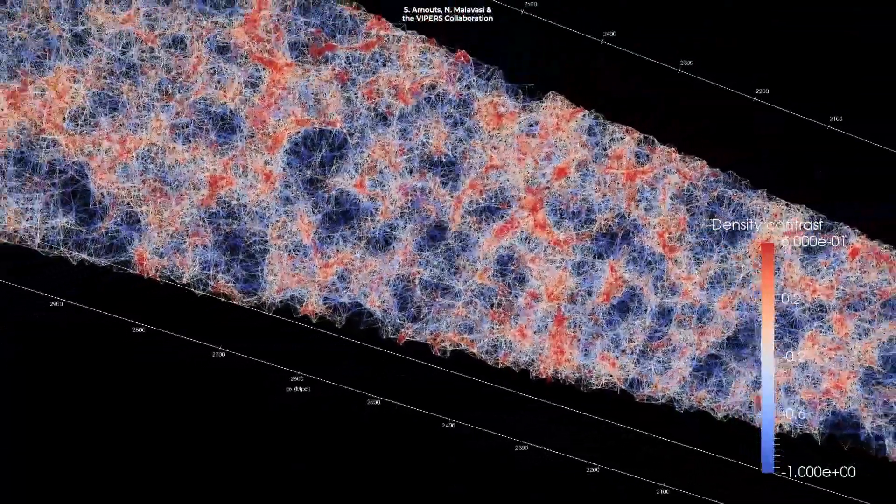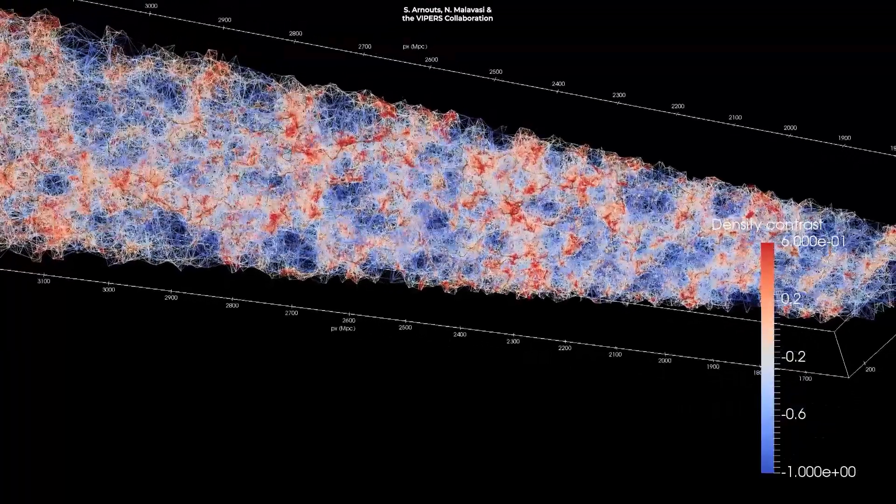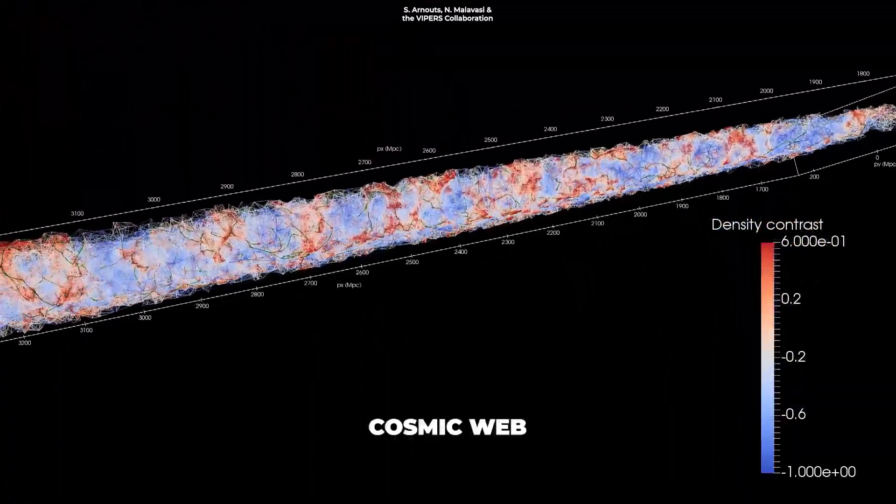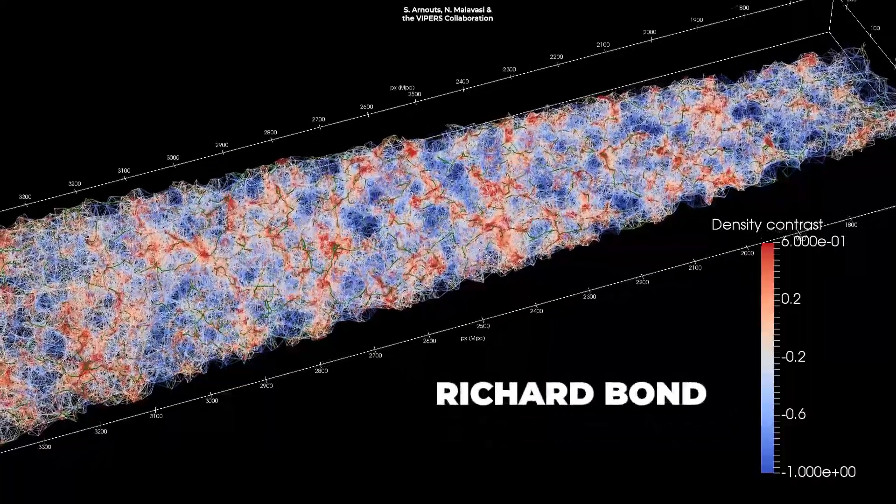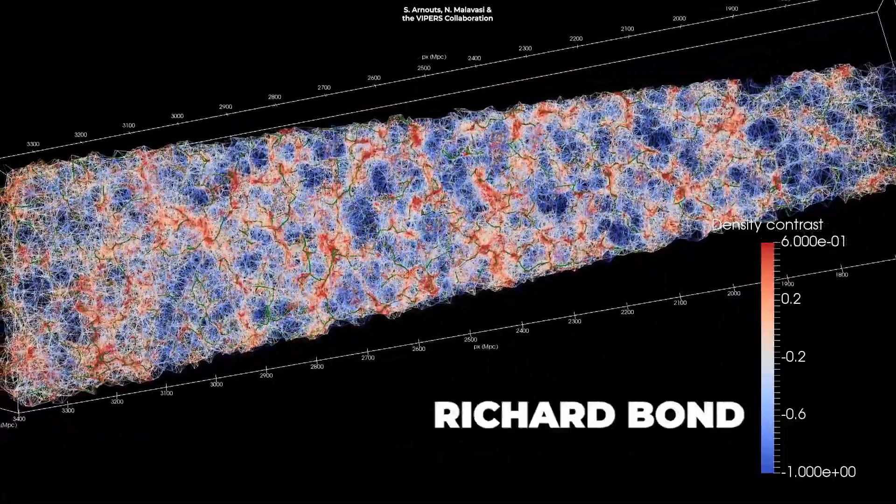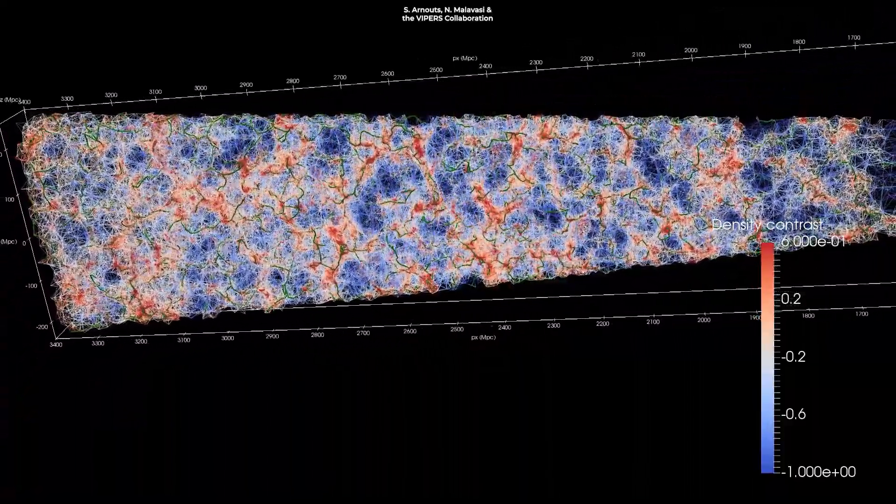The combination of these interconnected filaments separated by voids creates what's called the cosmic web, a term coined in 1996 by astrophysicist Richard Bond to describe a tangled structure of clumps and filaments created by dark matter.